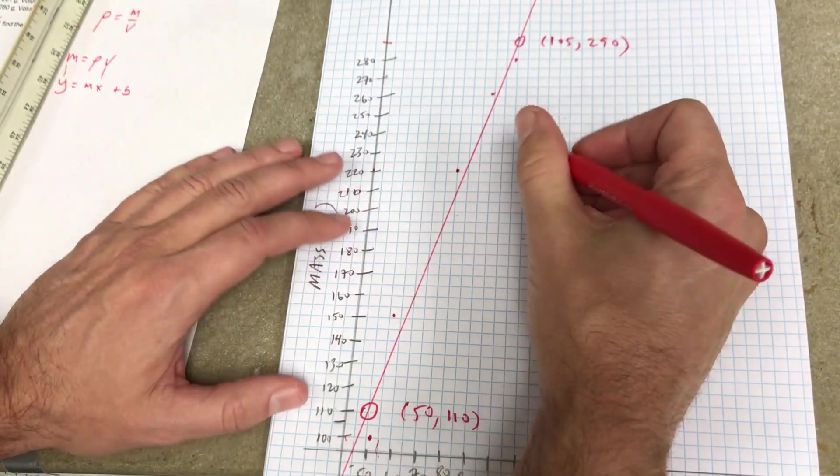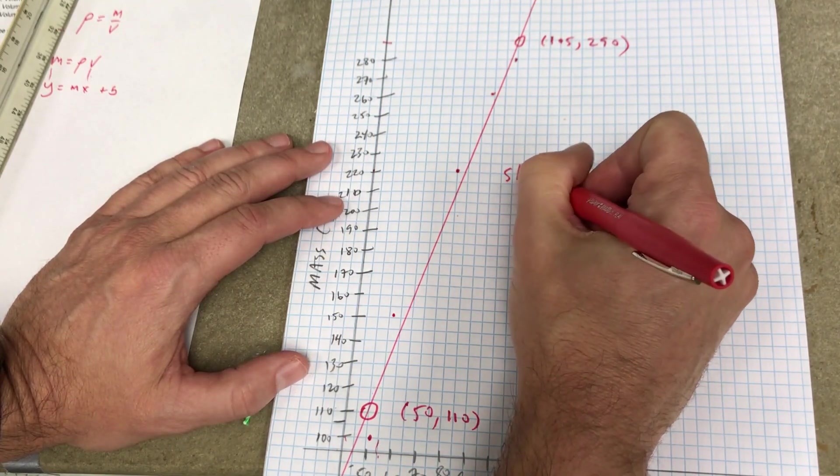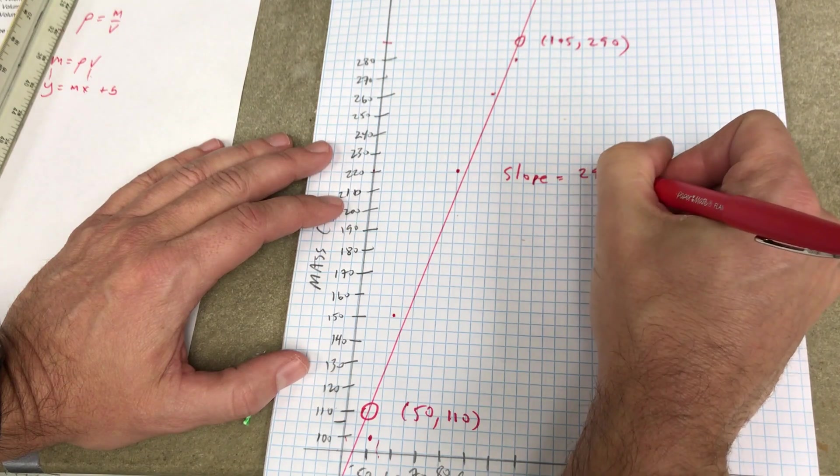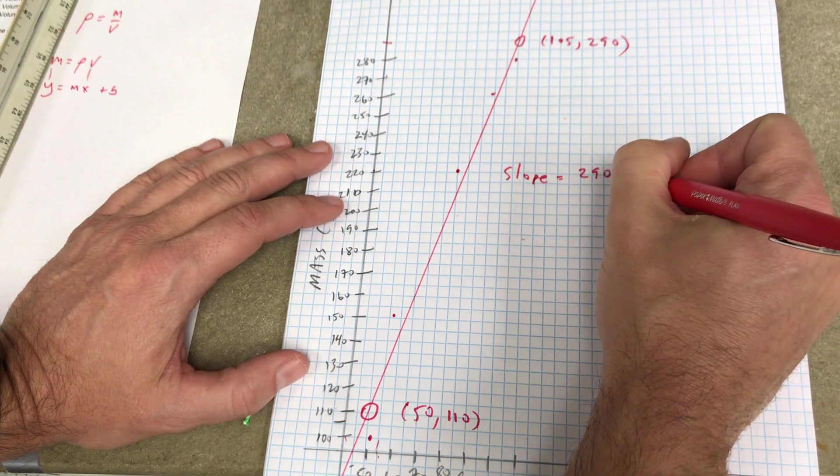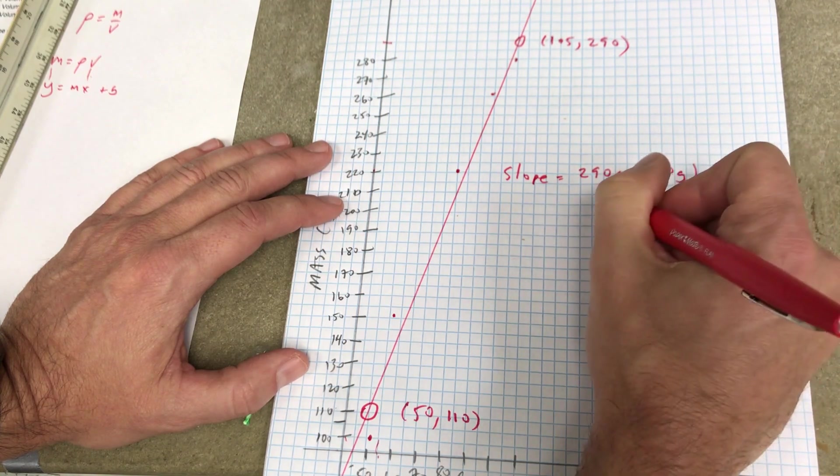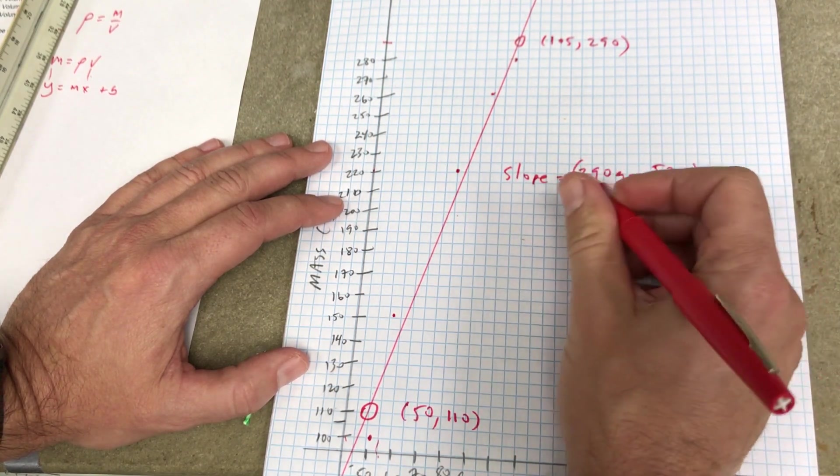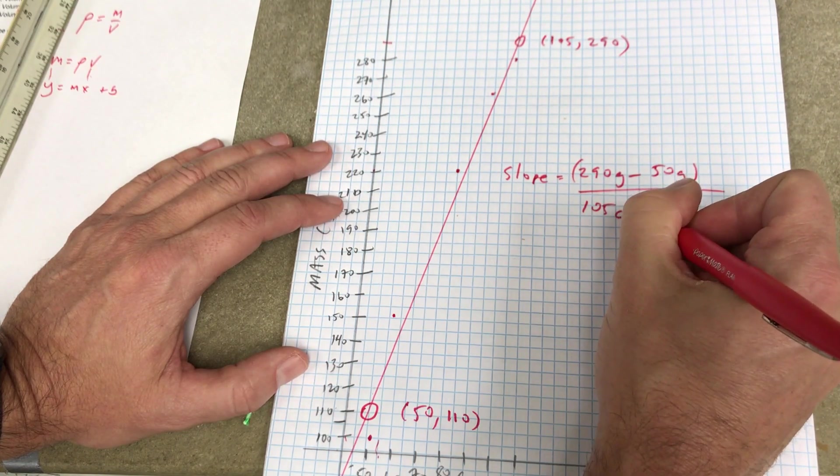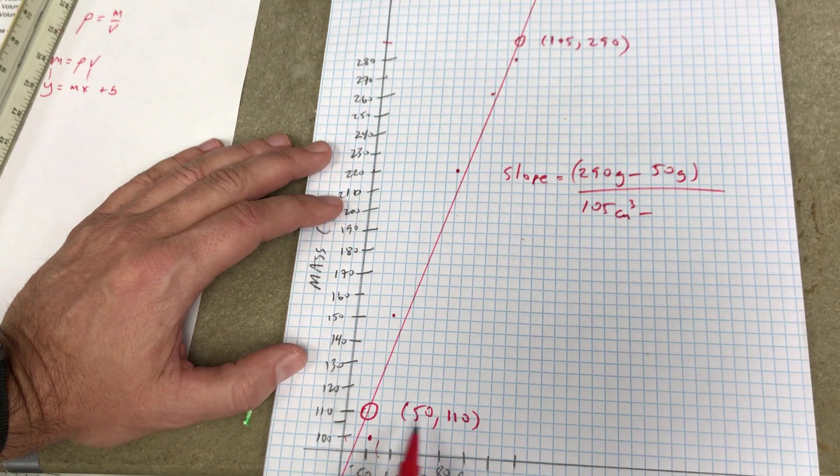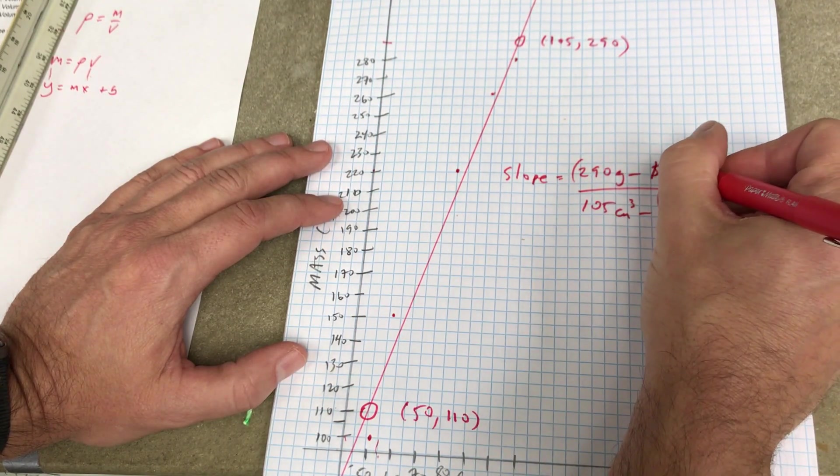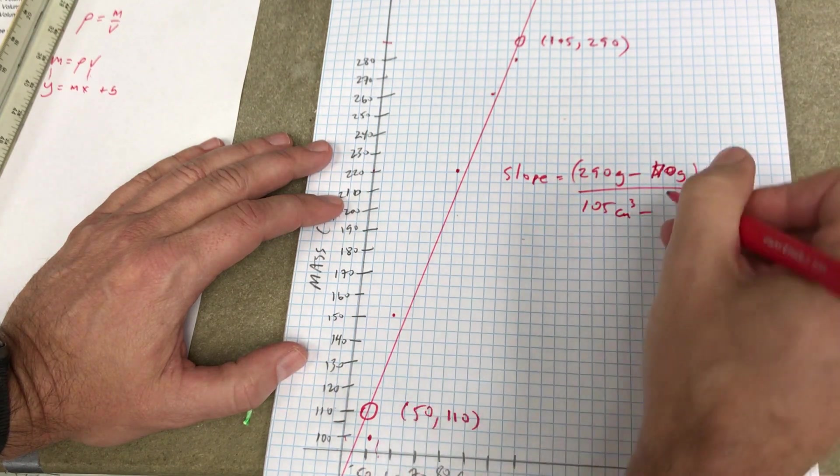This is 105, 290. Okay, so now I can get the slope. It's going to be the change in the y coordinate. So it's 290 grams minus 50 grams. All of that over the change in x, which is going to be 105 cubic centimeters minus, wait, I'm sorry, this is 110 minus 50.